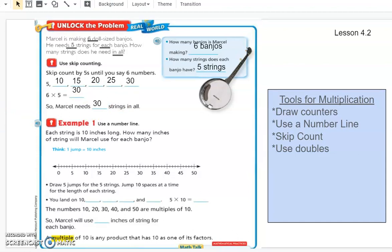So now let's go on to another problem, using a number line. If we take a look over at our tools for multiplication, a number line is one strategy that we can use. And it goes along with skip counting. So now we have the strings that he's using. We have 10 inches per string. So each string is 10 inches long. How many inches of string will Marcel use for his banjo?